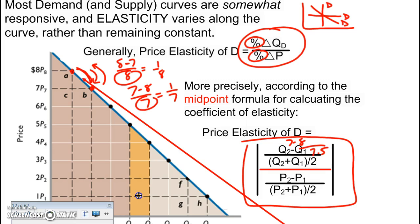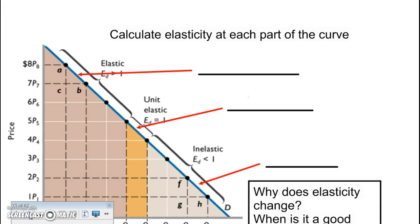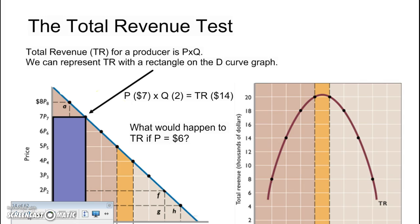If you calculate elasticity in the upper-left portion of a demand curve, you'll get a number greater than one, because the percentage change in quantity is large relative to the change in price. Lower on the curve, the percentage change in quantity is smaller. By definition: a coefficient equal to one is unit elastic, greater than one is elastic, and less than one is inelastic. You should be able to identify those coefficients and understand what they mean.